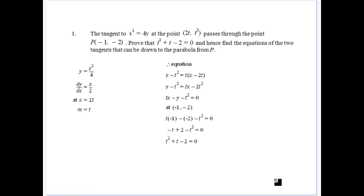The first question here, we've got a tangent in the normal form, but x squared is equal to 4y, so a is equal to 1. At a point (2t, t squared), pass through that point P(-1, -2). Prove that you can get t squared plus t minus 2, and find the two equations of two tangents that can be drawn to the parabola from P.